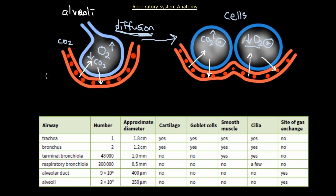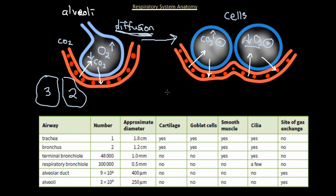Another thing to note: the right lobe of the lung contains three lobes, and the left lung contains two lobes, so it's a little bit smaller. The right lung has three, the left lung has two — just keep that in mind.